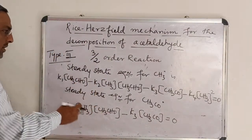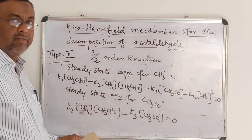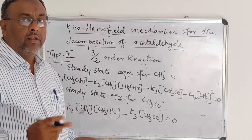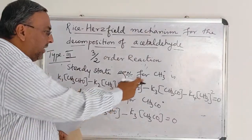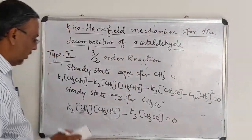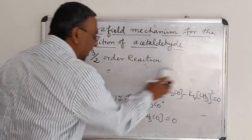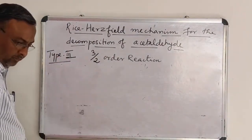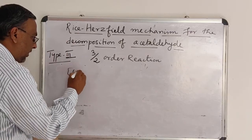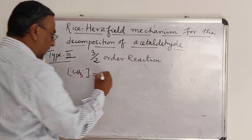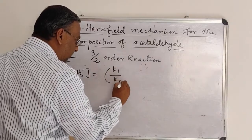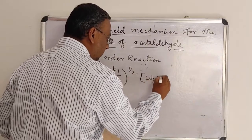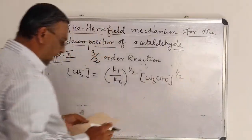Using these two steady-state equations, I am calculating the concentration of methyl radicals. The concentration of methyl radicals on simplification can be written as: [CH3•] = (K1/K4)^(1/2) · [CH3CHO]^(1/2).